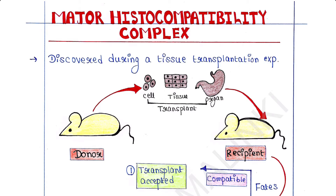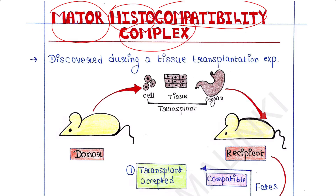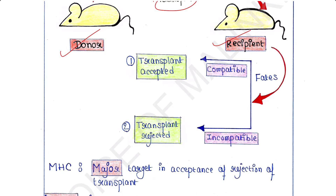Major histocompatibility complex — if we split the name it generates four words: major, histo, compatibility, and complex. Why this name? It was discovered during a tissue transplantation experiment. In tissue transplantation, a transplant is an organ, tissue, or group of cells removed from one individual — the donor — and transplanted into another individual — the recipient. The first fate is that the donor transplant gets accepted by the recipient, meaning the body does not react.